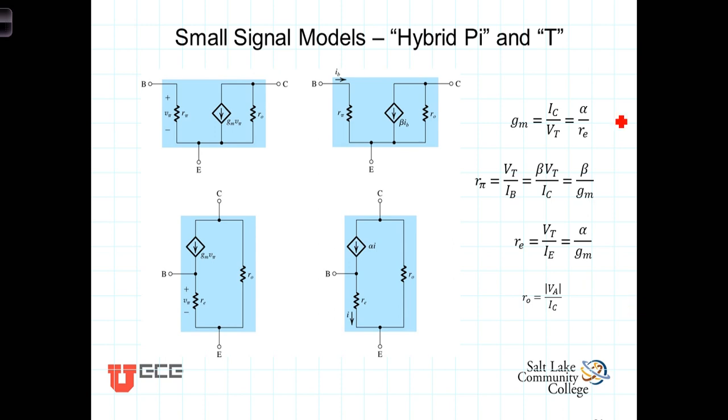Now that we've gone through and derived expressions for the transconductance of the small signal amplifier, Rpi, which was the resistance looking into the base, R sub E, the resistance looking into the emitter, and R0, the early effect, the resistance seen looking into the collector...